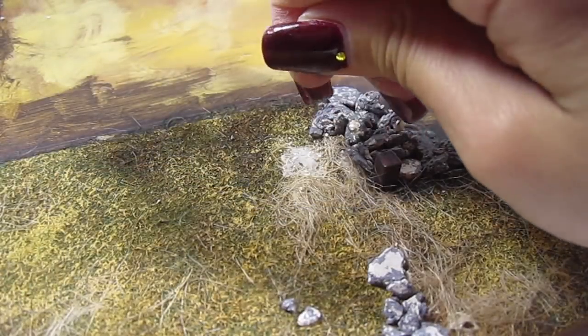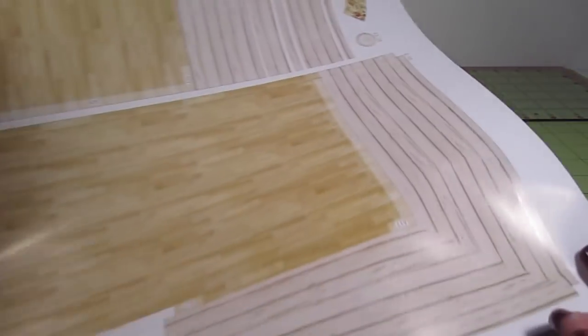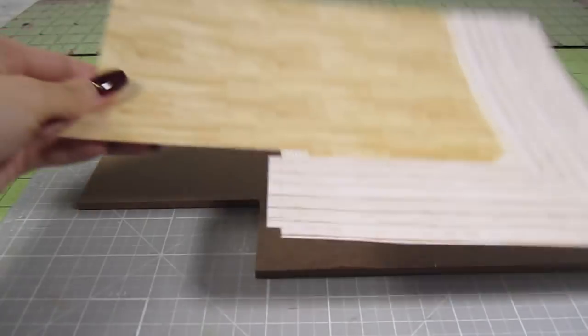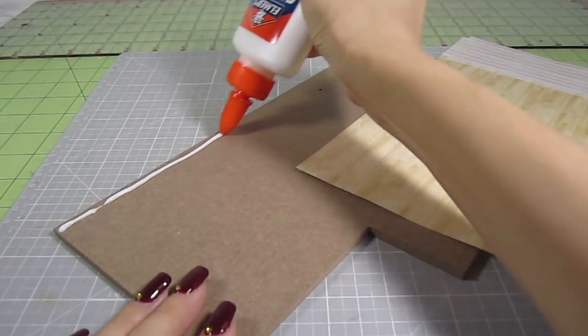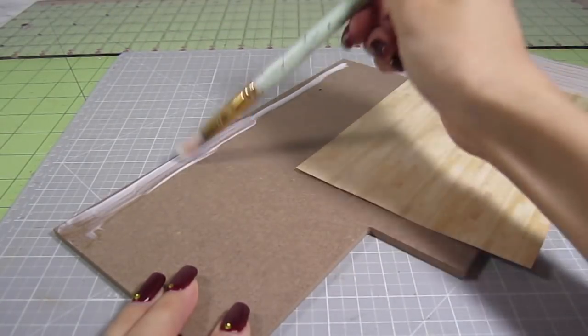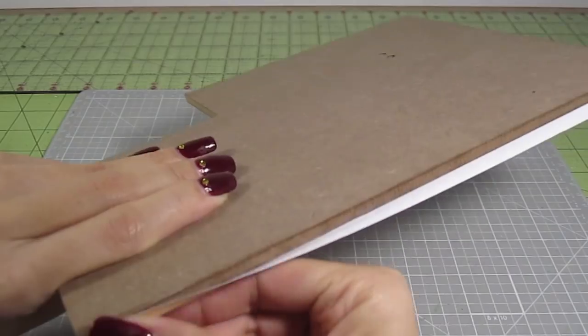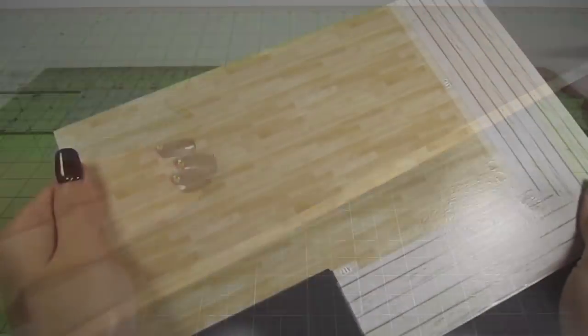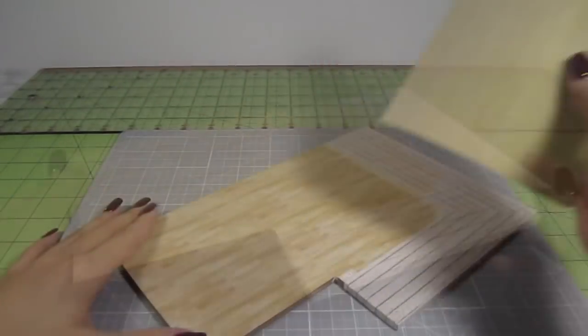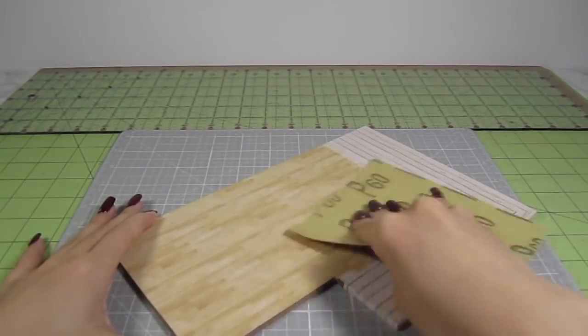Put this foundation piece aside for now and let's work on the house itself. Take the base of the house and this color printout. Cut out the flooring image and glue it to the base. I just squeeze some paper glue onto the wood, spread it out with a brush, and glue the paper on section by section. Then to distress it a little bit, I take some sandpaper and sand across the image. Look at the texture the sanding added.